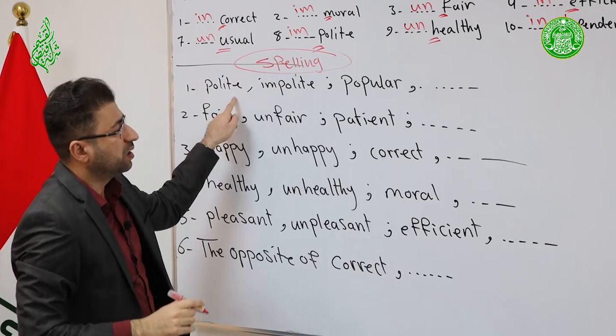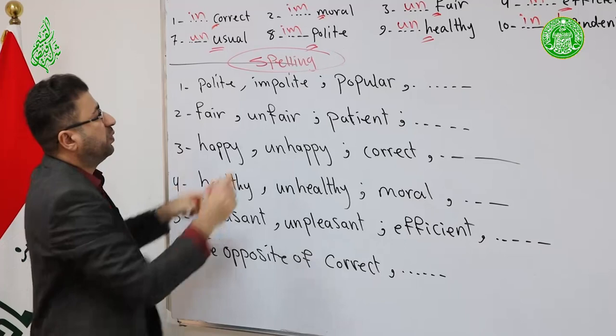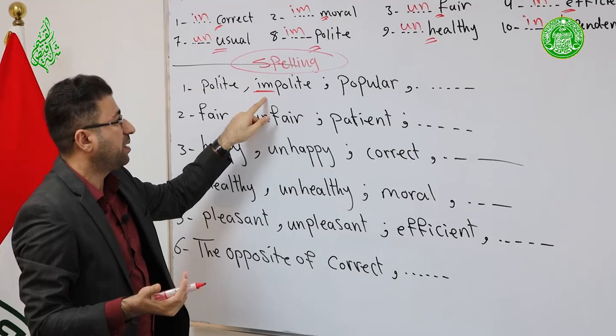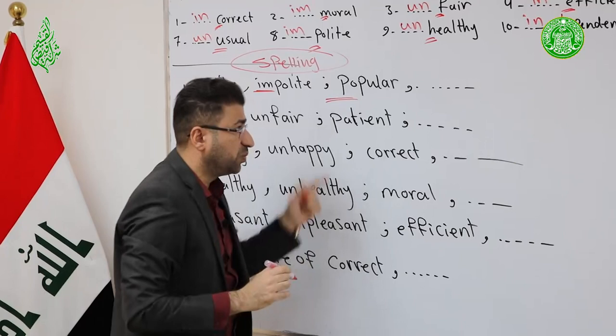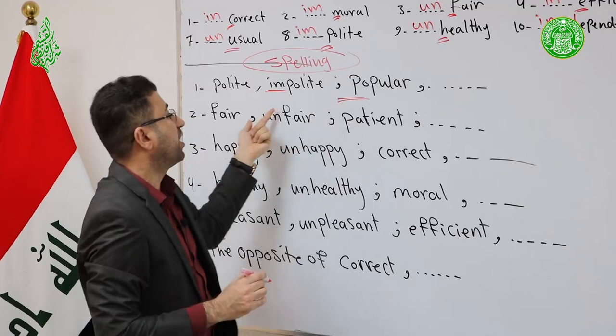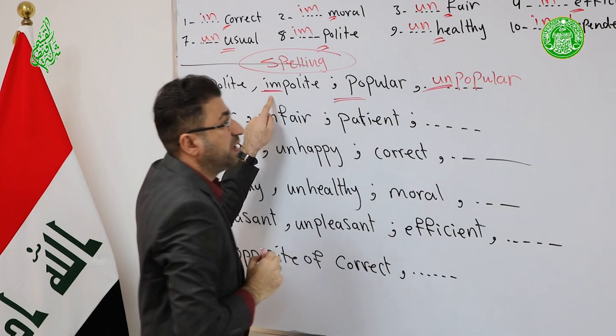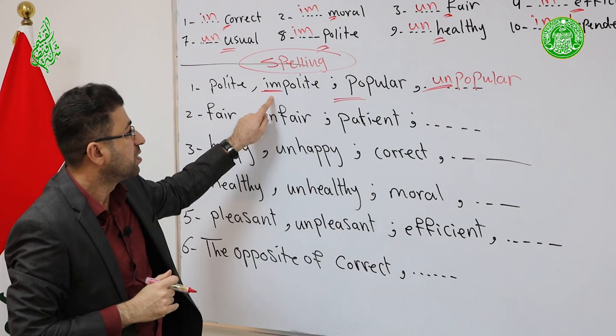Now a ministerial exam spelling exercise. Example: Polite → Impolite (add IM). Popular starts with P, but it's an exception — you must add UN: Popular → Unpopular, not Impopular. Students must be very careful here.